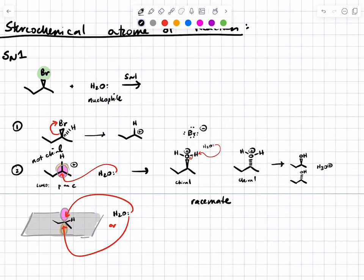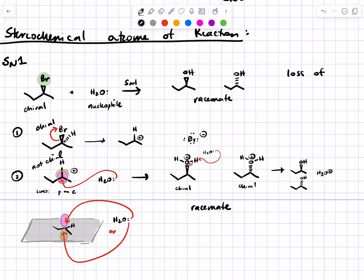What is the key stereochemical outcome of an SN1 reaction? Your starting material was chiral with a stereocenter, but your product is a racemate. You get loss of exclusive stereochemical configuration — you started with all of one enantiomer and you get a one-to-one mixture of both enantiomers. It's not technically correct to say loss of chirality because each enantiomer is chiral, but you do lose optical activity and enantiomeric excess. Even if you started with 100% of one pure enantiomer, you would get a one-to-one mixture.